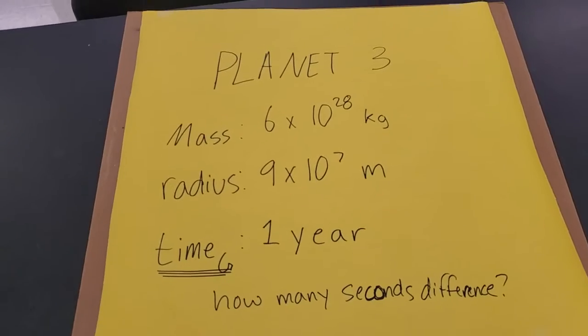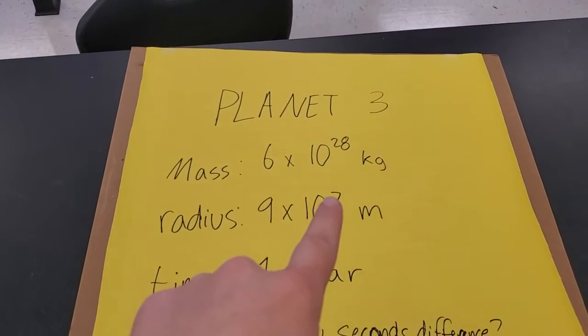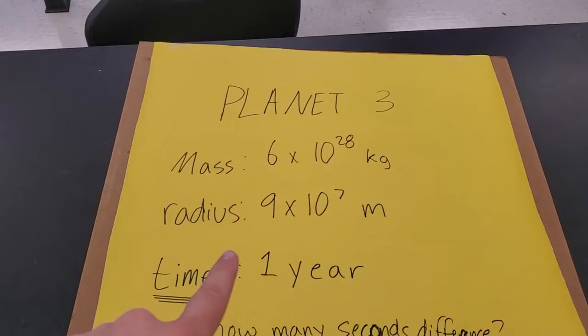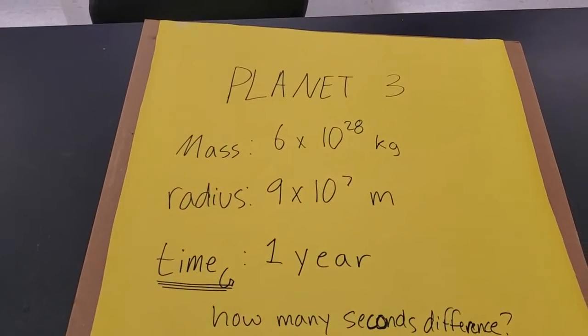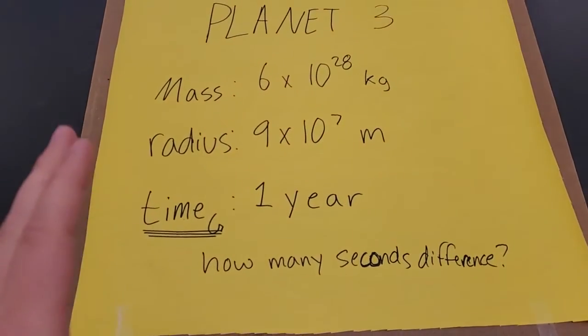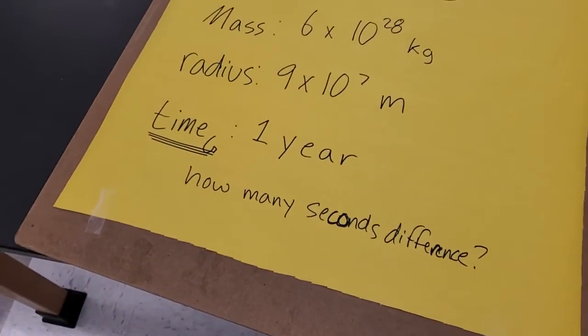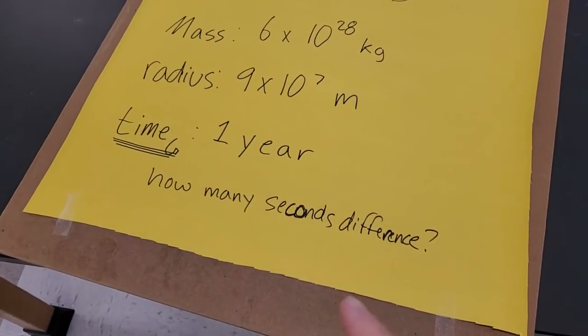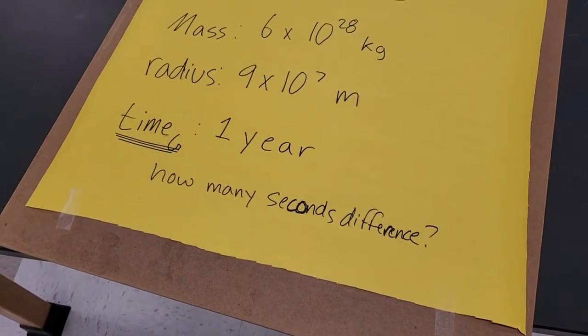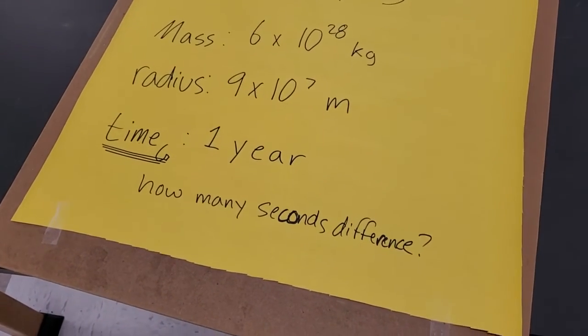Now we're on planet 3, here. We've got a mass of 6 times 10 to the 28th kilograms, a radius of 9 times 10 to the 7th meters. You spend a time of 1 year on the planet. You're spending 1 year on the planet. How many seconds difference is it for you once you contact people off the planet?